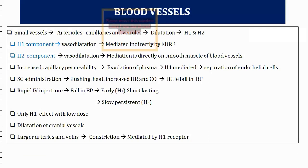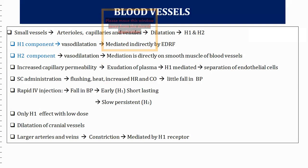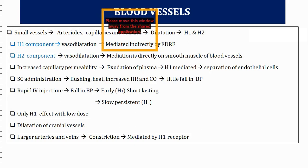Small blood vessels have both H1 and H2 receptors, and their role is dilation. Small vessels include arteries, capillaries, and venules. H1 receptors cause vasodilation indirectly — by release of nitric oxide through EDRF, which stands for endothelial-derived relaxing factor. This EDRF releases nitric oxide, which causes vasodilation.